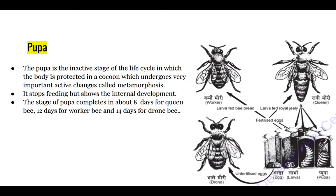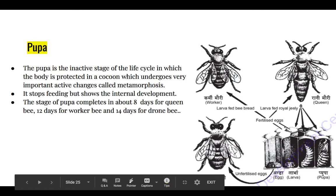The pupa is the inactive stage of the life cycle of any insect. Here also in the life cycle of the honeybee it is the inactive stage, and it is protected by the puparium or cocoon. Though it looks inactive from outside, inside there are many active changes going on, and those active changes are called metamorphosis. During this time the pupa stops feeding.